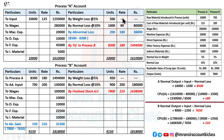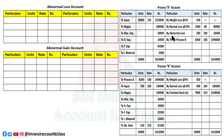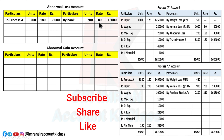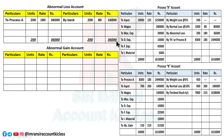Now prepare the abnormal loss and abnormal gain accounts. Abnormal loss arose in Process A: 200 units at ₹180 = ₹36,000 on the debit side. For the credit, the scrap sale rate (normal loss rate of ₹80) is applied: 200 × 80 = ₹16,000. The difference — ₹20,000 — is a loss transferred to Costing P&L account on the debit side.